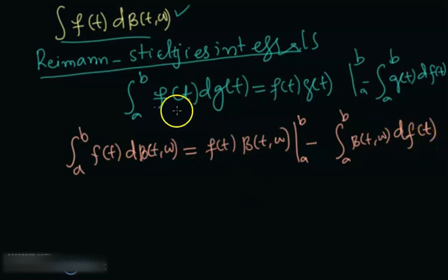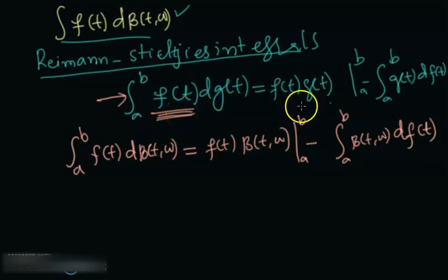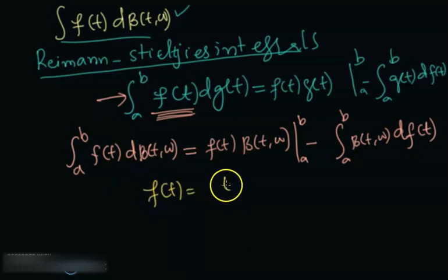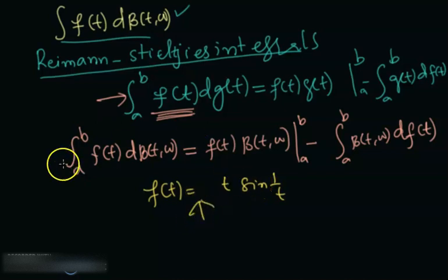But the problem here is that this Riemann-Stieltjes formula is helpful only when f(t) is continuous and has bounded variation. If you know a little bit from real analysis, the function f(t) = t·sin(1/t) doesn't have bounded variation. So this kind of function can't be integrated using this notion. Therefore, we need a completely new notion, and that notion is known as the Wiener integral.